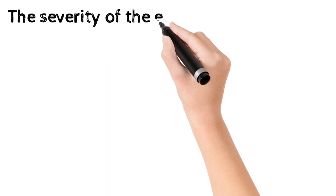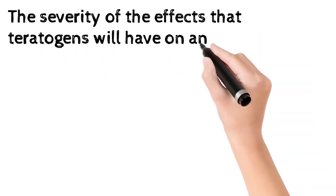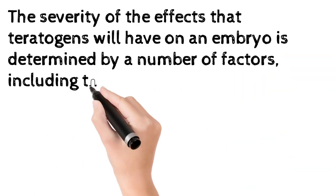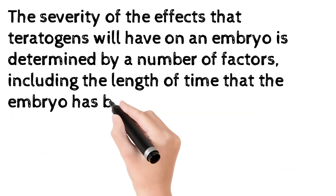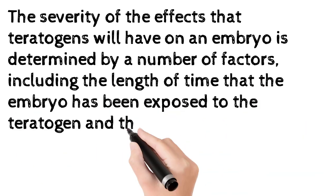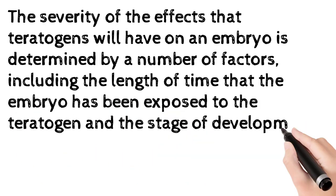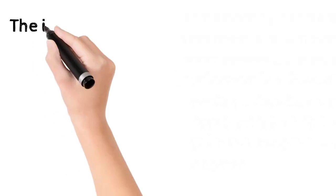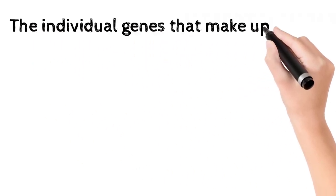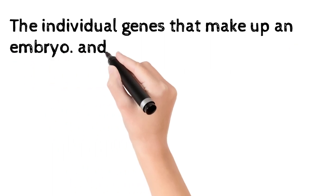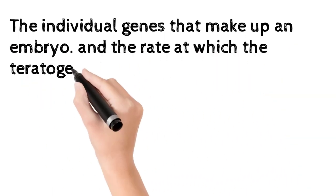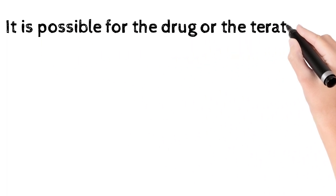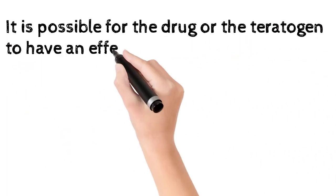The severity of the effects that teratogens will have on an embryo is determined by a number of factors, including the length of time that the embryo has been exposed to the teratogen, the stage of development that the embryo was in when it was exposed, the individual genes that make up an embryo, and the rate at which the teratogen is passed on.